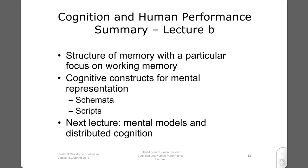In this lecture, we examined the structure of memory with a particular focus on working memory and considered cognitive constructs for mental representation, including schemata and scripts. In the next lecture, we will examine another form of cognitive construct — mental models — and introduce the distributed cognition approach.